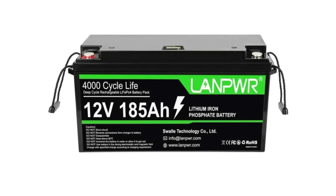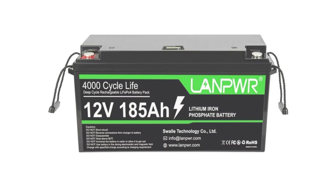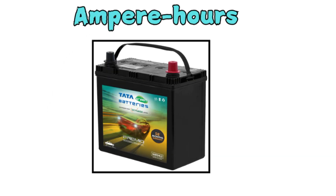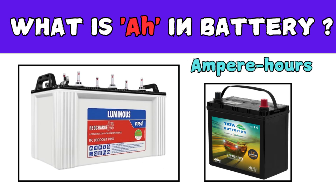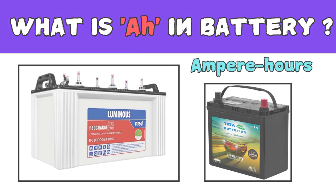So AH, or Ampere Hour, is calculated by multiplying the time with the current in your load — the outcome is the AH value. This is how the battery works and this is the significance of the Ampere Hour in a battery.